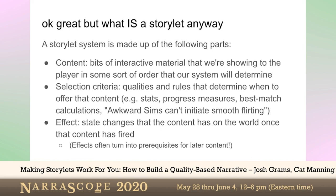A storylet system is made up of the following parts: bits of interactive material that we are showing to the player in some sort of order — the system will determine what that is. Selection criteria: qualities and rules that determine when to offer that content, which vary on stats, progress measures, best-match calculations like in games like King of Chicago, or even rule sets like 'awkward sims can't initiate smooth flirting.' And then eventually each bit of content will have an effect on the world state. State changes will occur once content has fired, which will often become qualities or prerequisites that feed back into the selection criteria, and on and on.